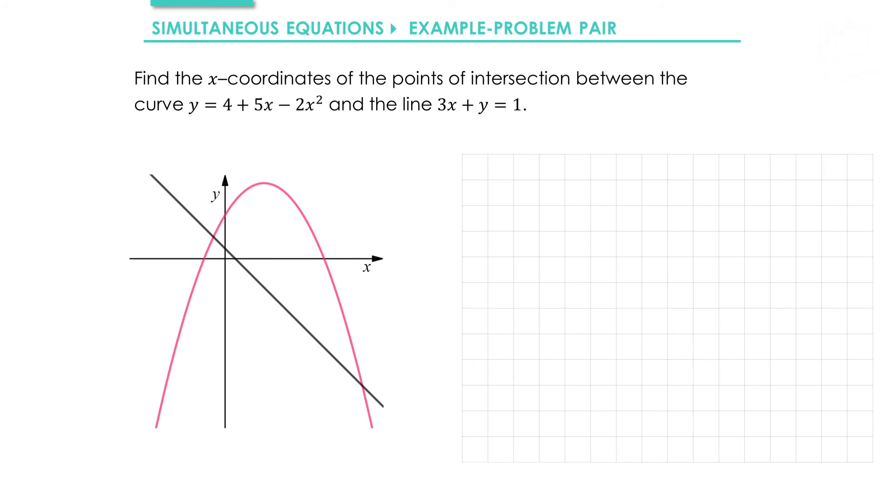Welcome back, here's my solution. If you got it right well done, that's the end of this example. Otherwise I'll go through my solution now. So to begin with we'll take 3x plus y equals 1 and we'll rearrange it by subtracting 3x from both sides. That gives me y equals 1 minus 3x.